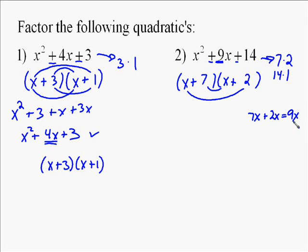x times 2, which is 2x, 7 times x, which is 7x. Add those together, and yes, we have our 9x, which is what we needed as that middle term. So x times x is x squared, 7x plus 2x is 9x, and 2 times 7 is 14. So the answer is x plus 7 times x plus 2.